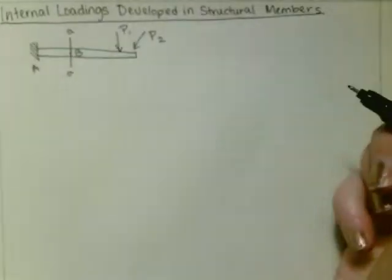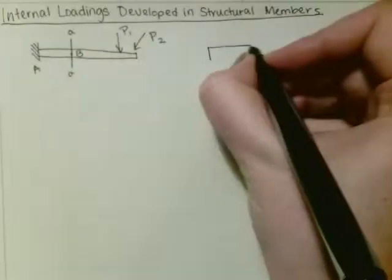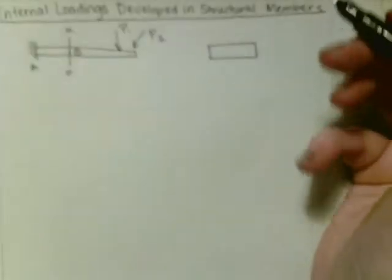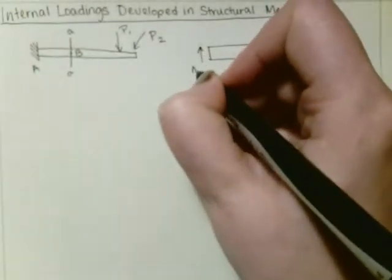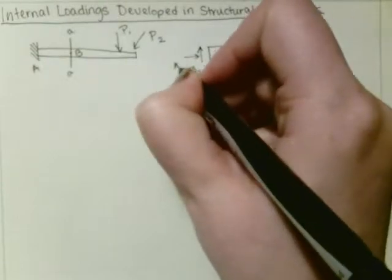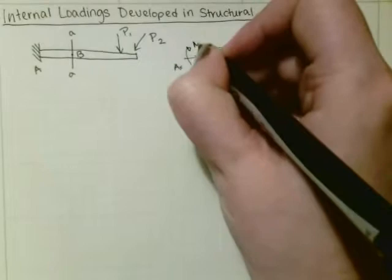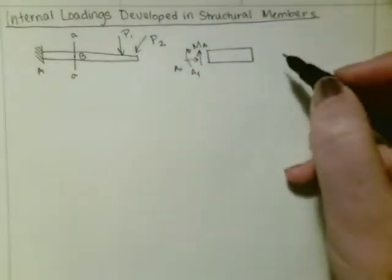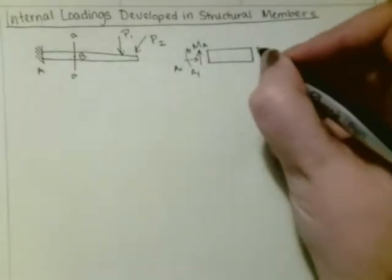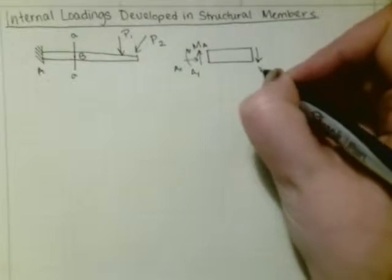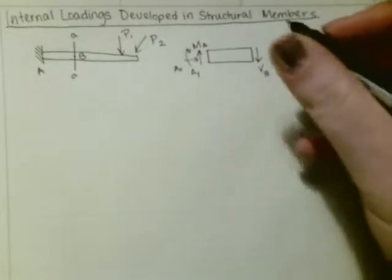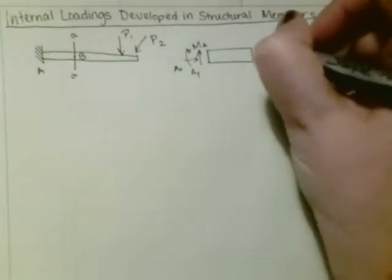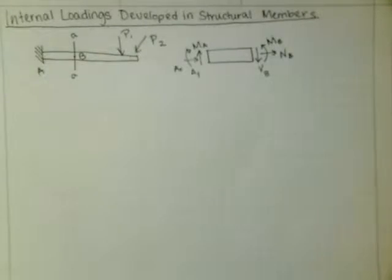Then we could draw its free body diagram. For that first section, at point A we've got a fixed support, so it's going to have a force in the Y direction AY, a force in the X direction AX, and a moment MA. Then at the area of the cut, we're going to have its internal loads: the shear force VB, the normal force NB, and the bending moment MB.